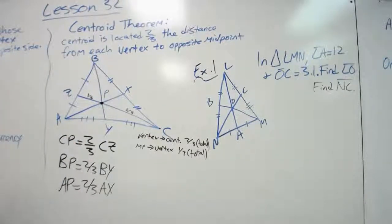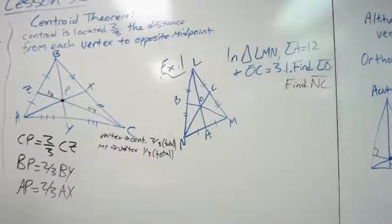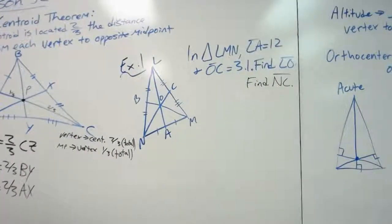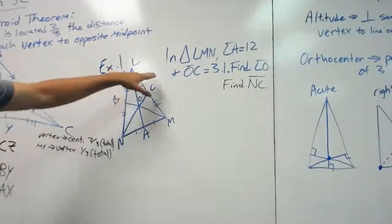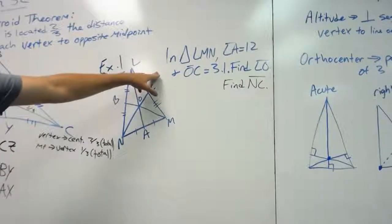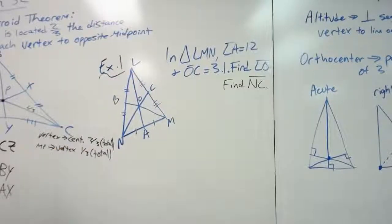So now let's look at example one and see if we can solve a problem using the centroid theorem. Example one gives us this triangle. And it says in triangle LMN, line LA is 12, OC is 3.1. Find LO and NC.